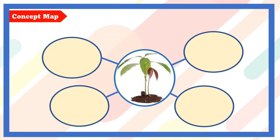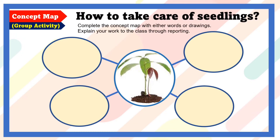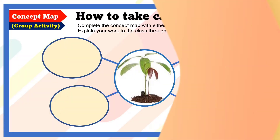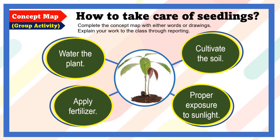Look at this concept map — we can do it as a group activity. The question is: how to take care of seedlings? Complete the concept map with either words or drawings, and explain your work to the class through reporting. If I were to answer it, I would say: water the plant, apply fertilizer, cultivate the soil, and proper exposure to sunlight.